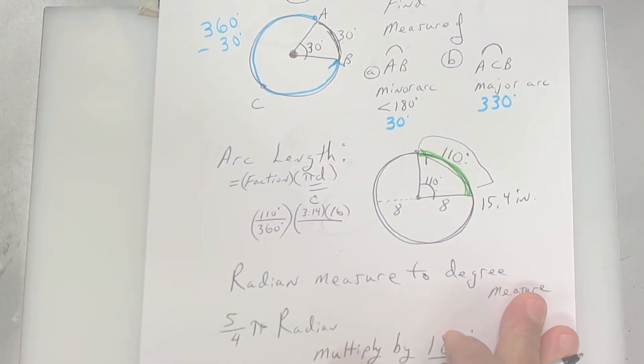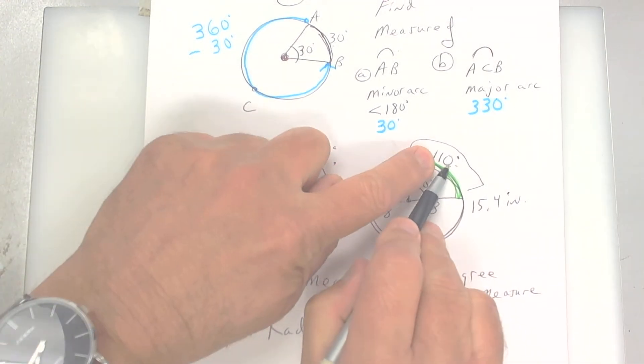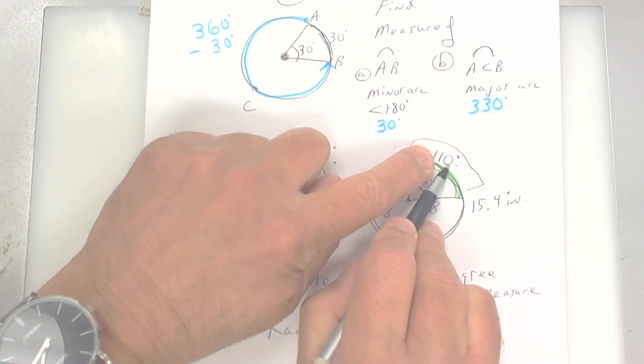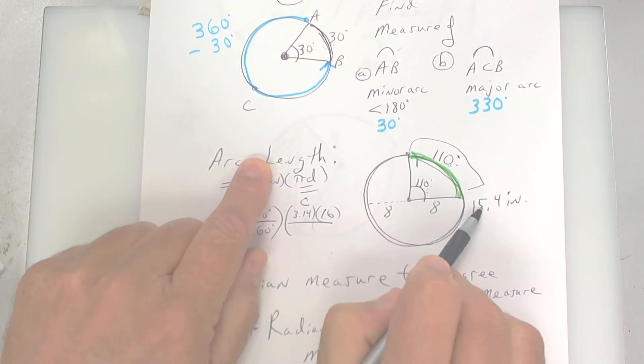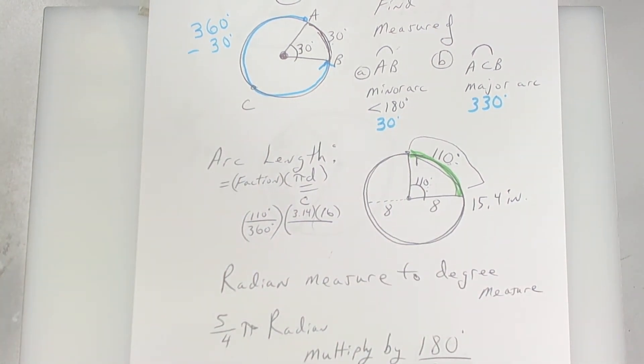Now, let me explain this again. The measure is 110 degrees, but the actual length, how long it is, is 15.4. Make sure you understand that.